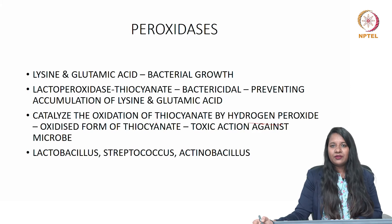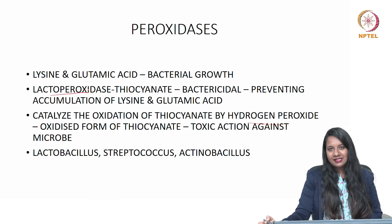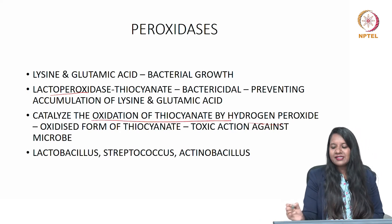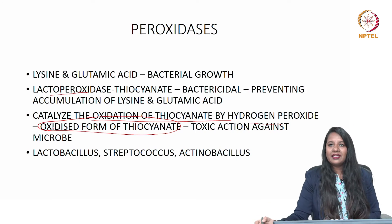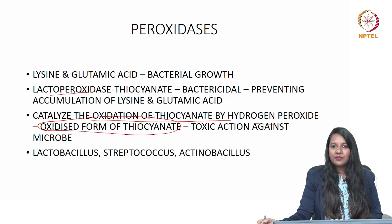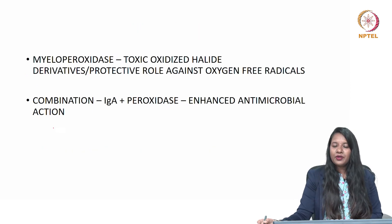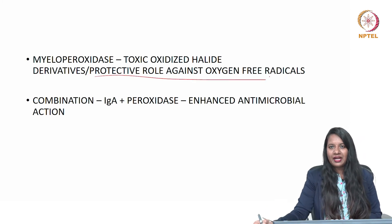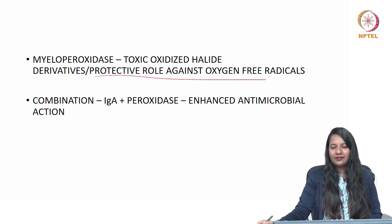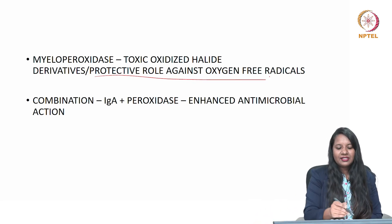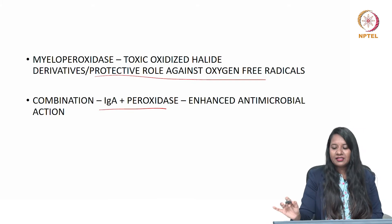Peroxidases: few pathogens need lysine and glutamic acid for their growth. These peroxidases will be bactericidal, preventing accumulation of lysine and glutamic acid, and catalyze the oxidation of thiocyanate by hydrogen peroxide. The oxidized form of thiocyanates is most toxic against various pathogens such as Lactobacillus, Streptococcus, and Actinobacillus. Myeloperoxidase also produces toxic oxidized halide derivatives with a protective role against oxygen free radicals. Combined with immunoglobulins, it has enhanced antimicrobial activity — the combination of IgA and peroxidase has the most enhanced antimicrobial action.